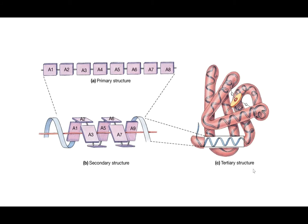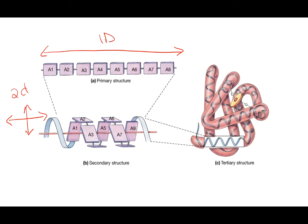Another way to think about the structure levels is in terms of dimensions. Primary structure is one-dimensional — it's just a line. Secondary structure is two-dimensional — you've got length and some height, forming a helix or pleated sheet. Tertiary structure is truly three-dimensional: up and down, left and right, and bending forward and backward in space as well.